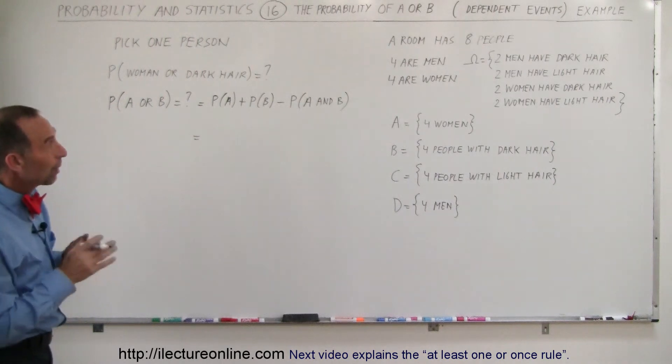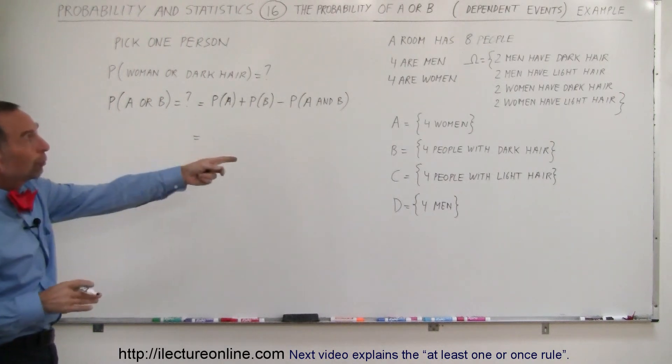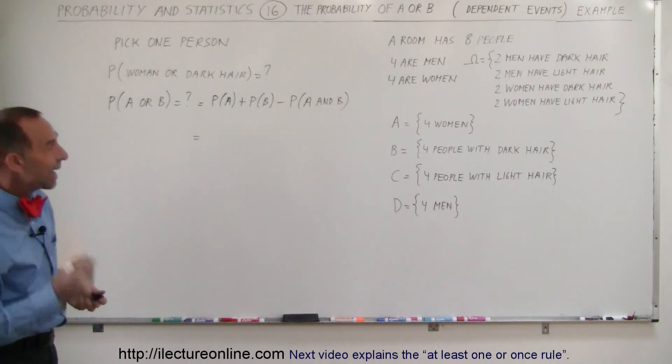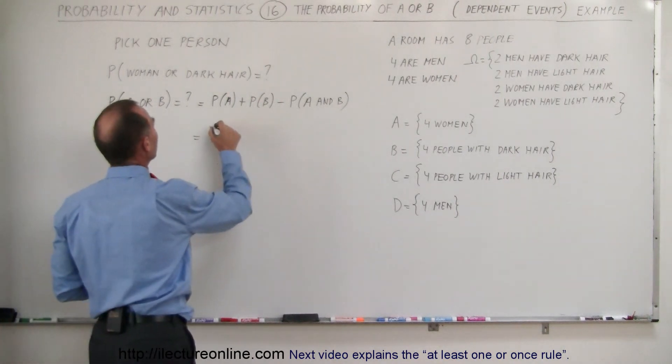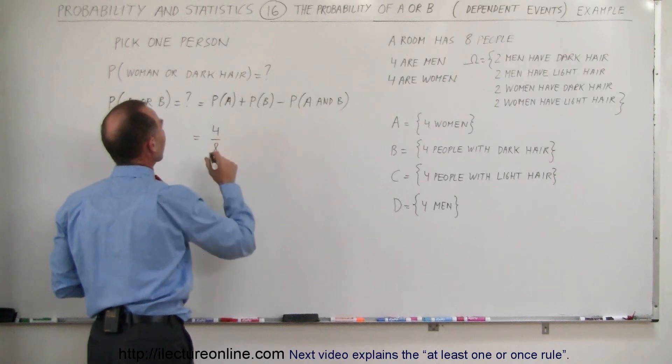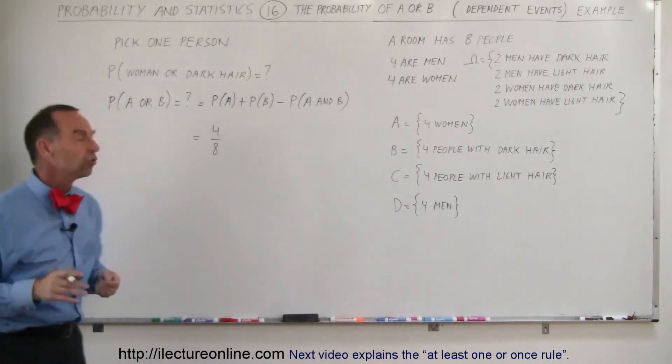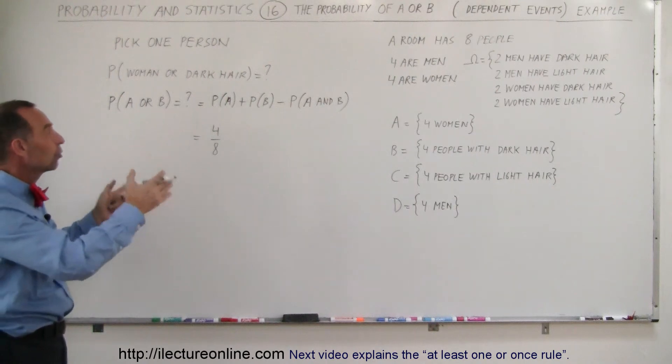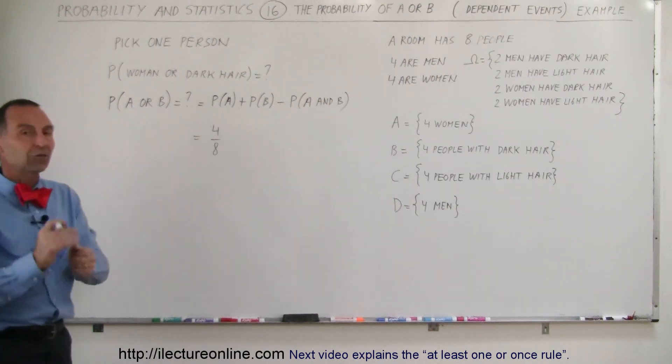So what is the probability that A will occur? Well A is the probability that it's a woman. There's four women and the total outcomes in the sample space is eight. So the probability for A would be four out of eight. There's four outcomes that it's a woman, eight total outcomes, so the probability is four divided by eight.